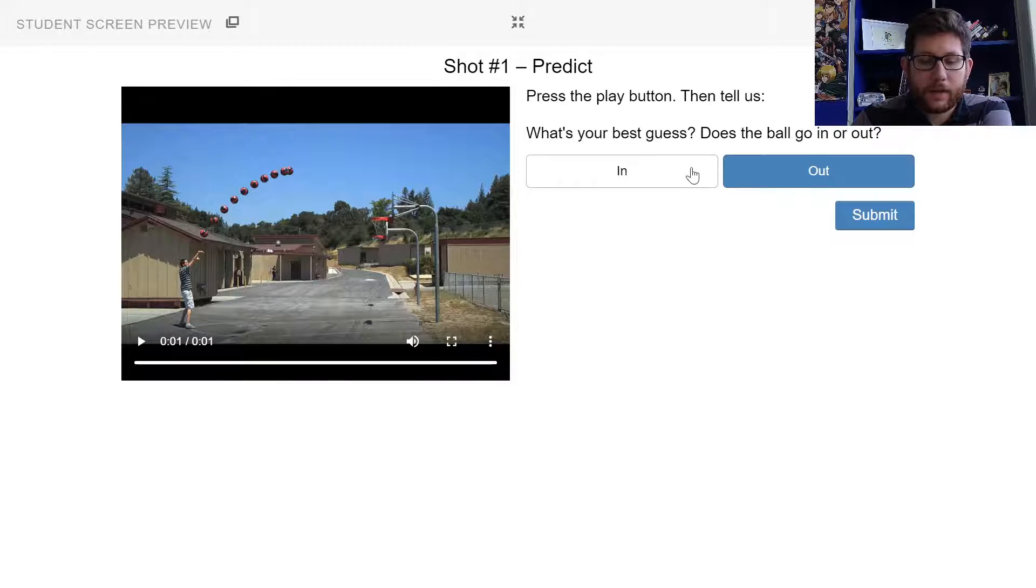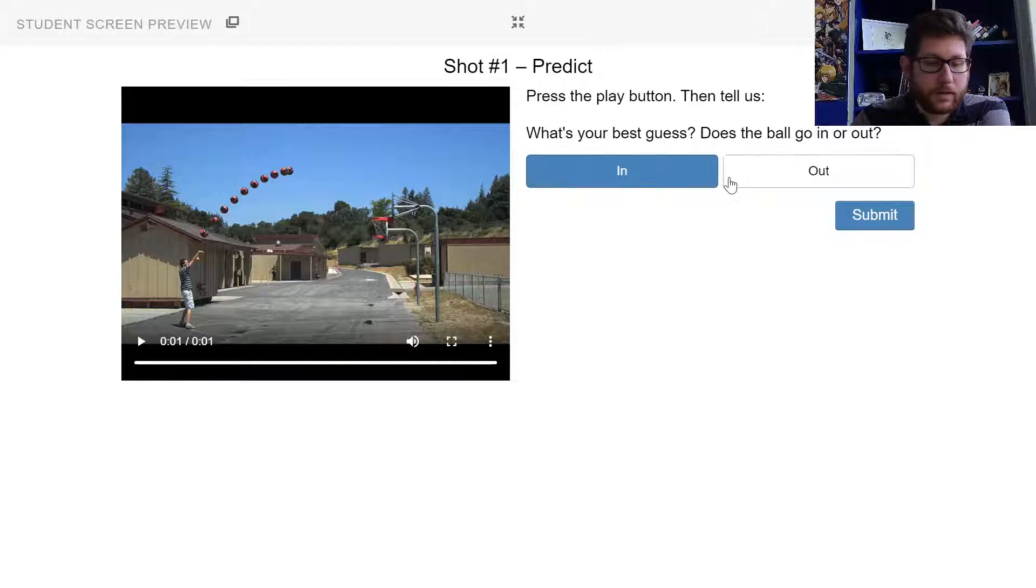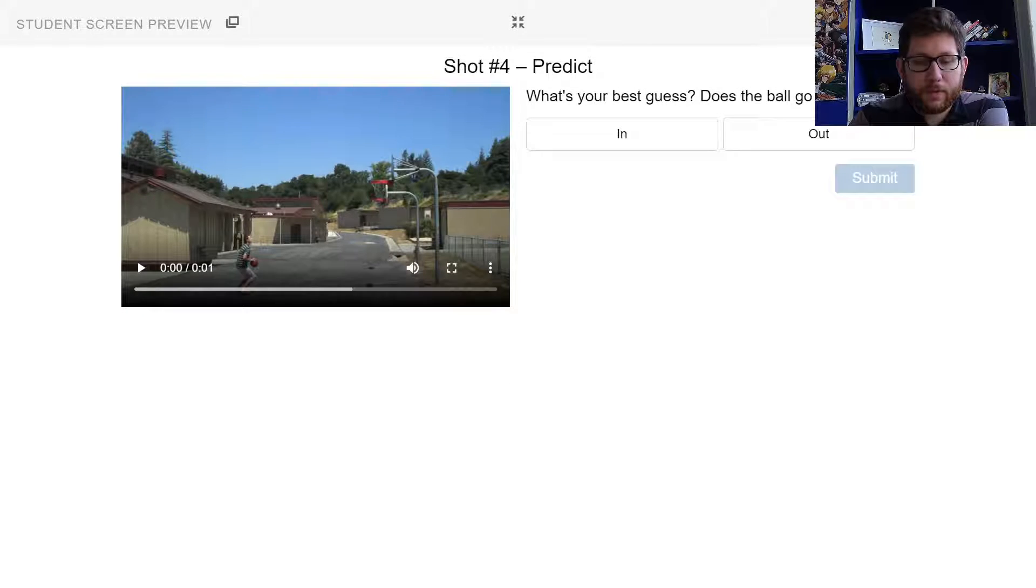So you know, say I think it's going to go out, I think it's going to go in, whichever one you think it is. I'll say looks like it's going to go in, so I'll hit submit here. But you could change it if you wanted to. Now there's going to be seven of these, so it's going to take a minute. But watch each clip, predict each shot. So you're going to predict seven.